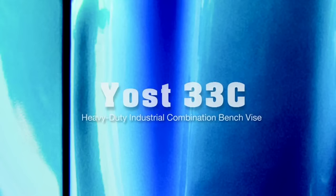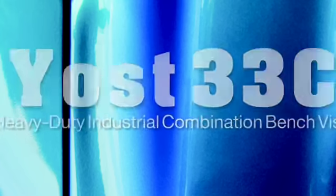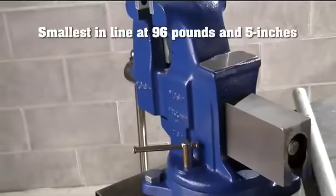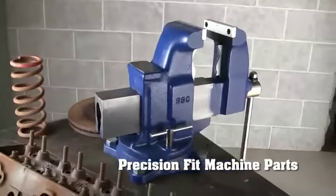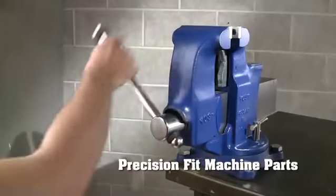Here is the Yost 96-pound 5-inch 33C, the smallest in the Yost line of heavy-duty industrial combination bench vises. This and all Yost vises include precision-fit machine parts.